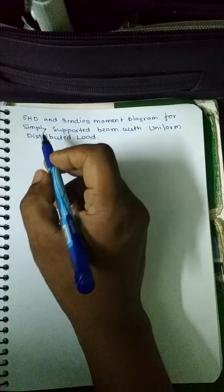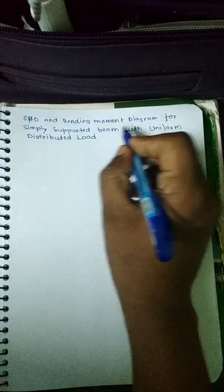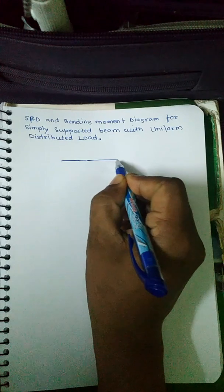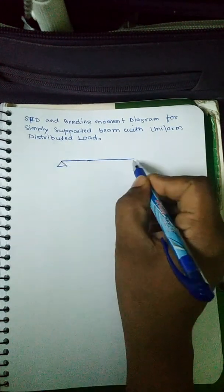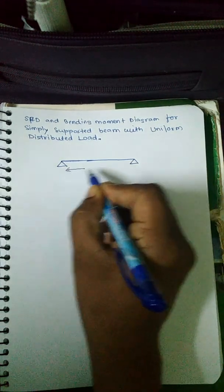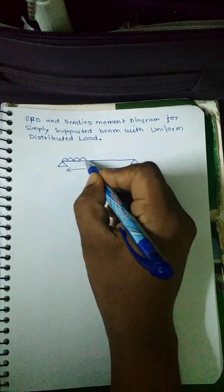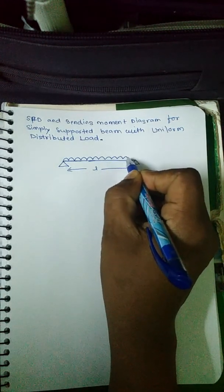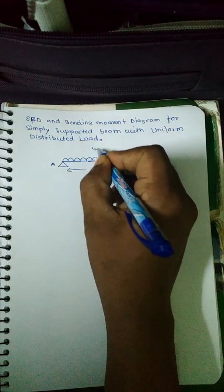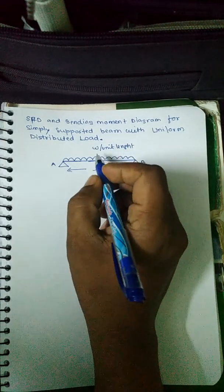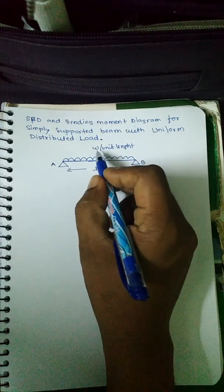Here we will find the shear force diagram and bending moment diagram for a simply supported beam with a uniform distributed load. The beam length is given as L, and a uniform distributed load of w per unit length is applied.